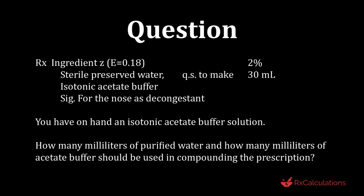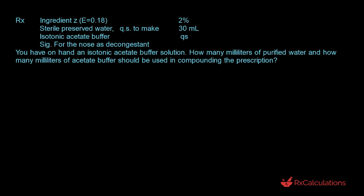Let's take a look at another example. Ingredient Z has an E value of 0.18 and is at 2% concentration in the preparation. Sterile preserved water is added to make 30 milliliters, and the preparation is then brought to volume with an isotonic acetate buffer. The preparation is a nose drop decongestant. You have on hand an isotonic acetate buffer solution. How many milliliters of purified water and how many milliliters of acetate buffer should be used in compounding the prescription?